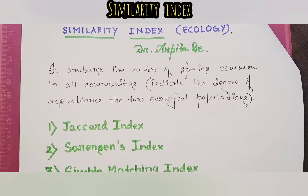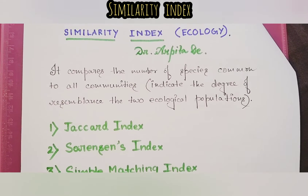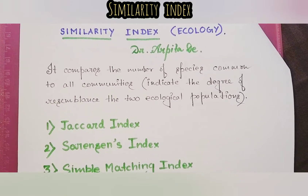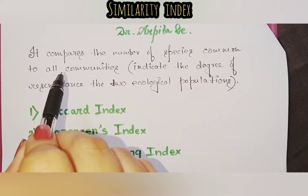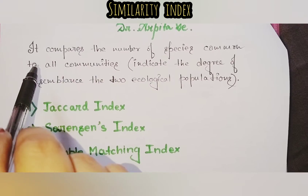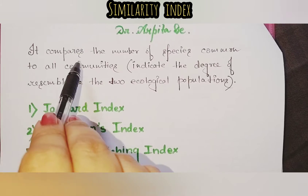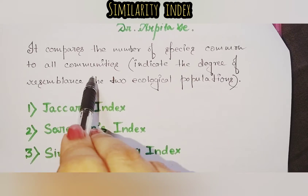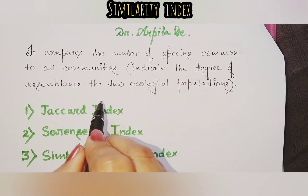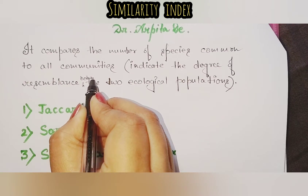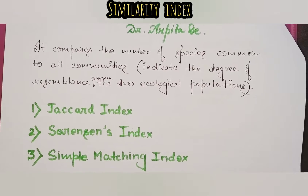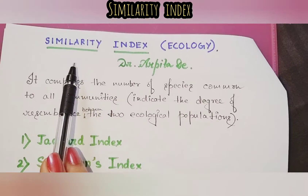Hello everyone, I'm Dr. Apita. The topic for today's discussion is similarity indices in ecology. Similarity indices generally do a comparative study — they compare the number of species common to all communities and indicate the degree of resemblance between two ecological populations.